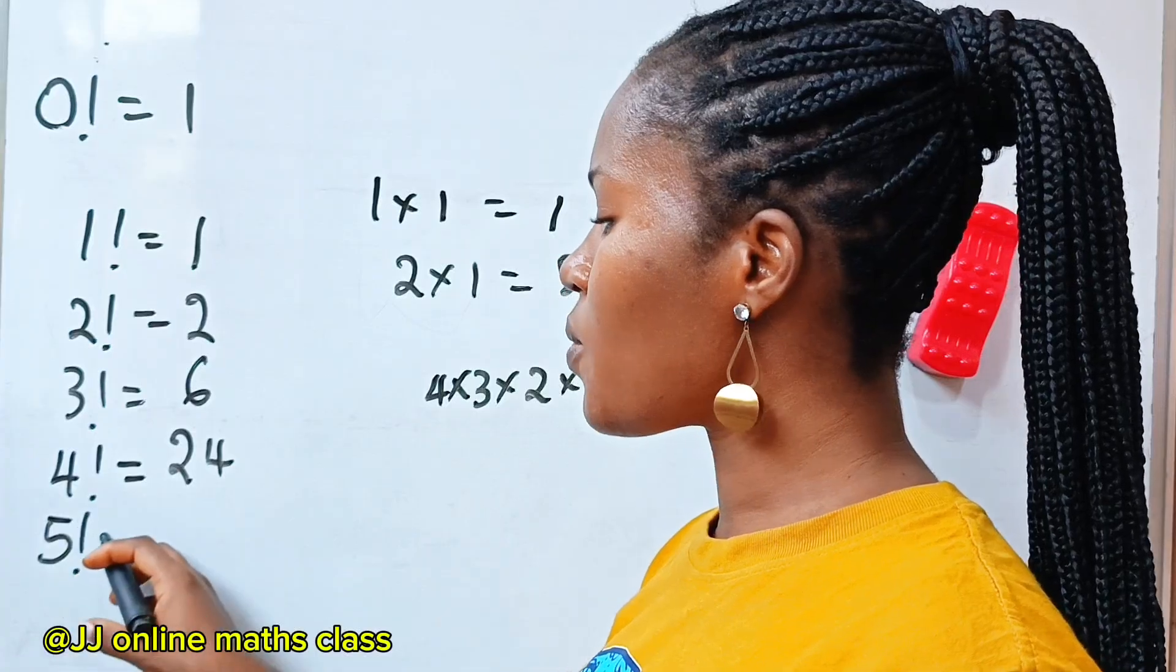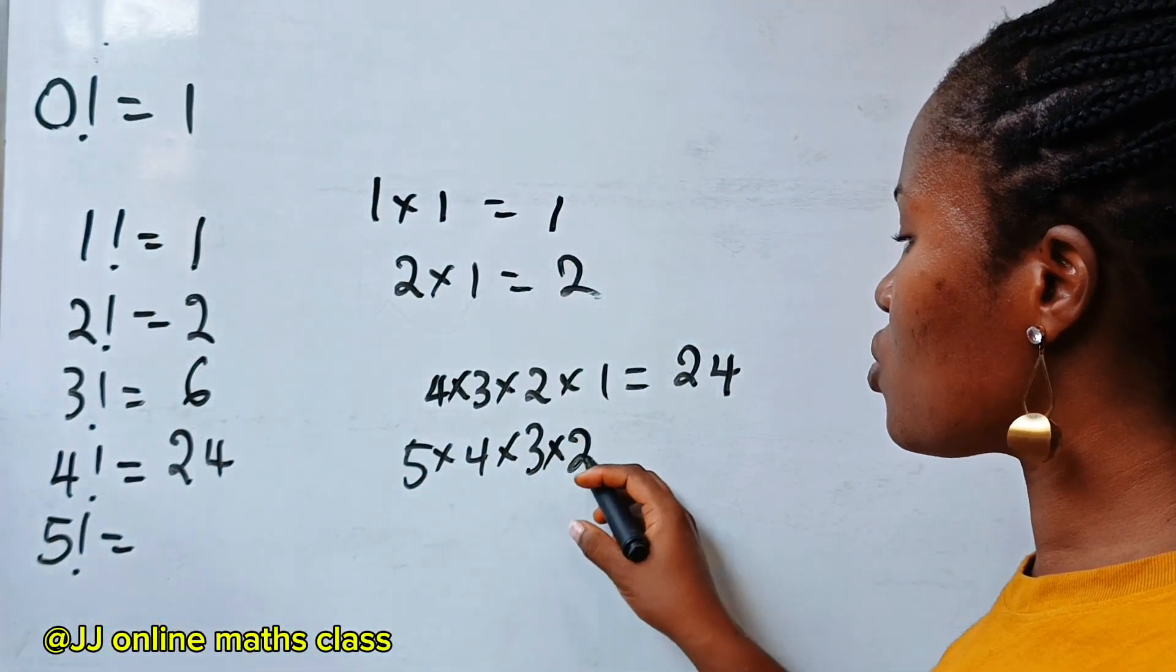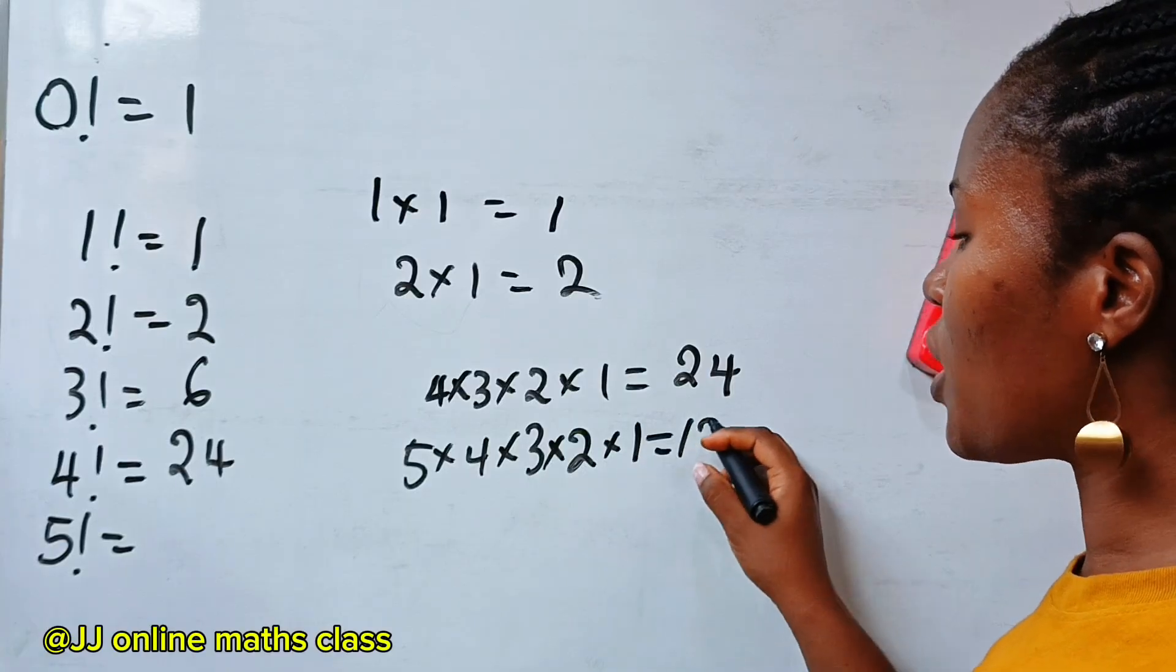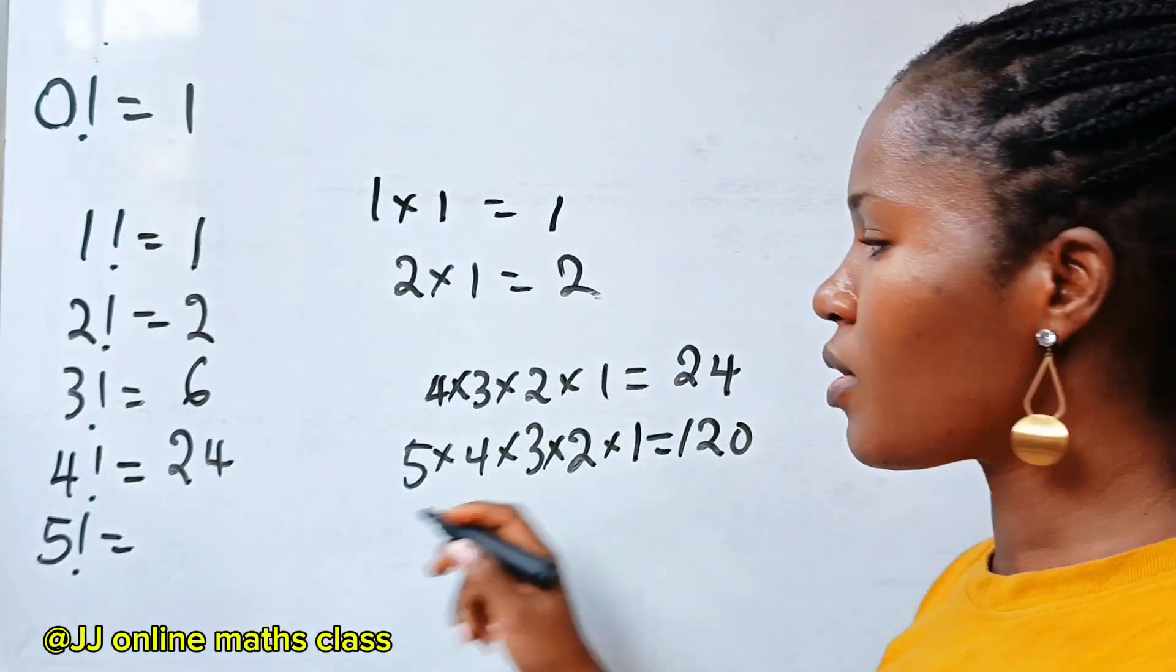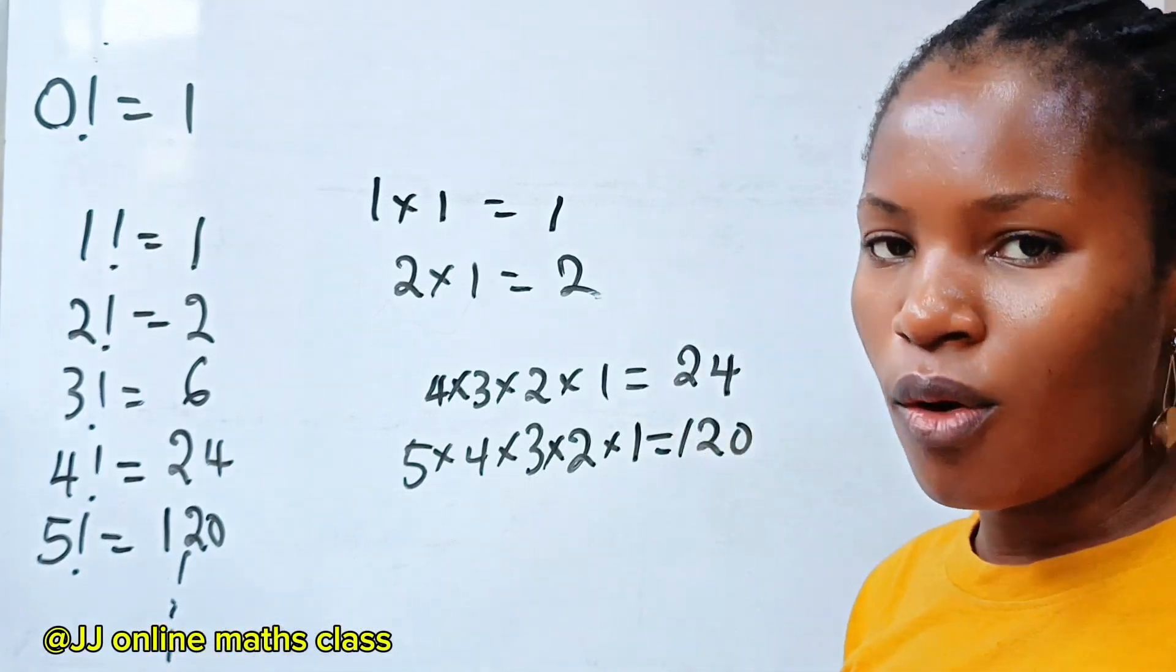So we have 4 factorial to be 24. Now, 5 factorial is 5 times 4 times 3 times 2 times 1, which will give us 120. And the list goes on and on.